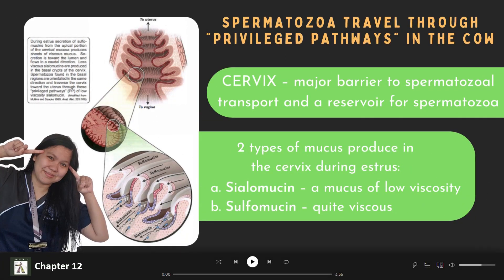Next, we will discuss how spermatozoa travel through privileged pathways in the cow. The cervix is a major barrier to spermatozoal transport and also a reservoir for spermatozoa. Following natural insemination in the cow, ewe, and to some degree the mare, spermatozoa must negotiate the highly convoluted system of grooves within the cervix. During estrus, the cervix produces mucus of two types: sialomucin, a mucus of low viscosity, and sulfomucin. Sialomucin is produced by cells in the basal areas of the cervical crypts, while sulfomucin is produced in the apical portions of the cervical epithelium covering the tips of the cervical folds.